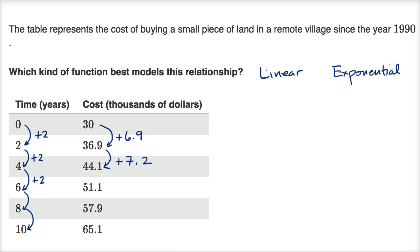And now to go from 44.1 to 51.1, you would have to add seven. Now to go from 51.1 to 57.9, you are adding 6.8.